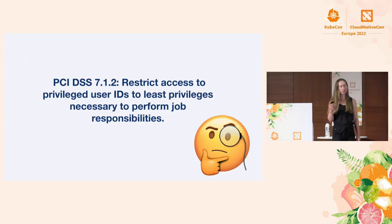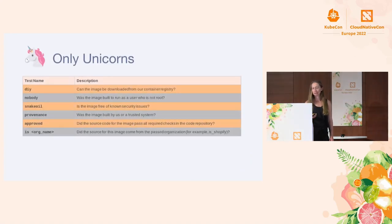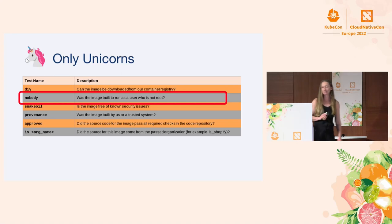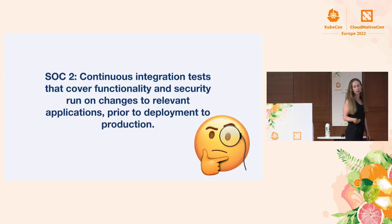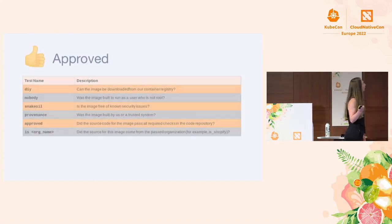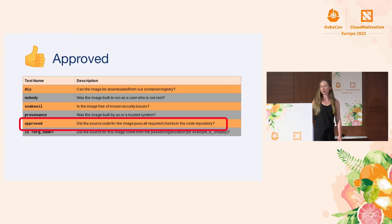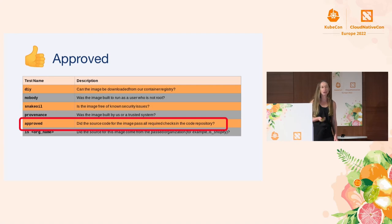Here's another PCI requirement about restricting access and ensuring least privilege. We want to make sure containers are being run by a unique account and not as root. Voucher has a check for that: the 'nobody' check, which ensures an image was built to run as a non-root user. And for one more: there's a SOC 2 requirement that CI tests are run to cover security prior to deployments. We have a check for that too — the 'approved' check. In just a few lines of YAML, enabling several checks and attestations, we've satisfied quite a few different compliance requirements.